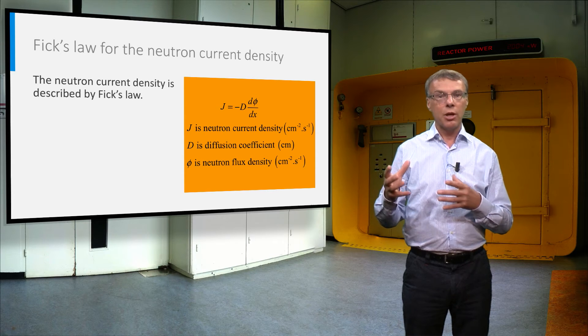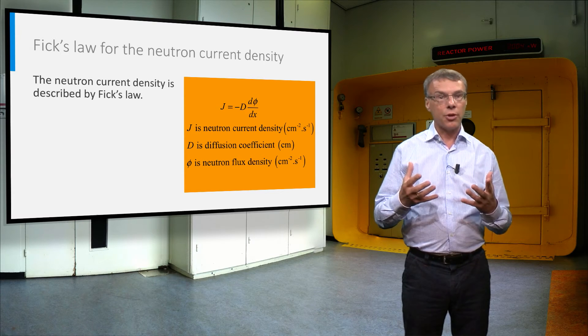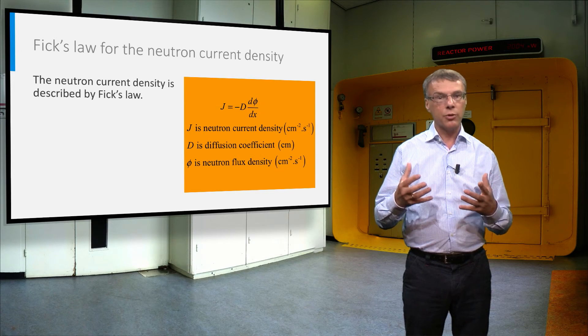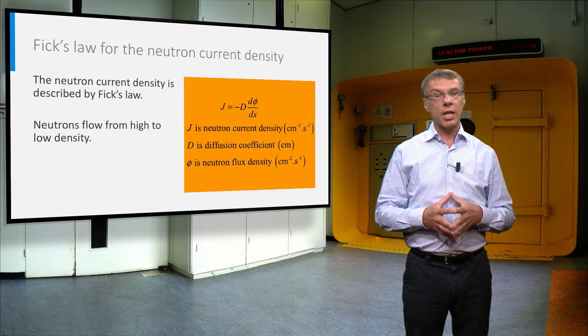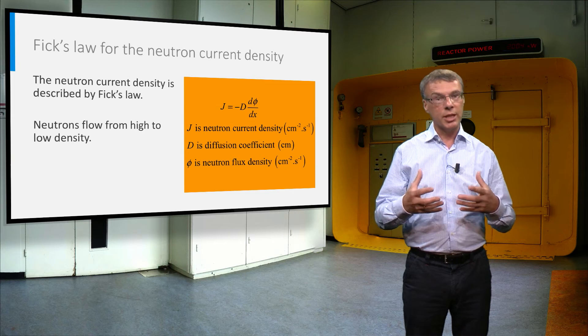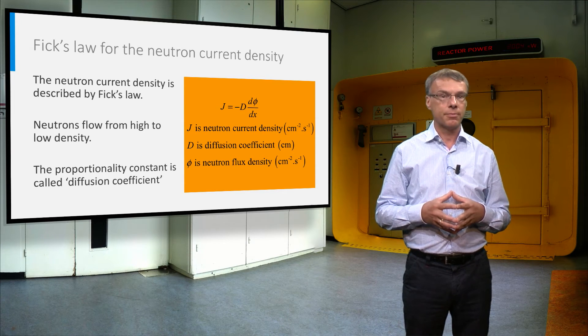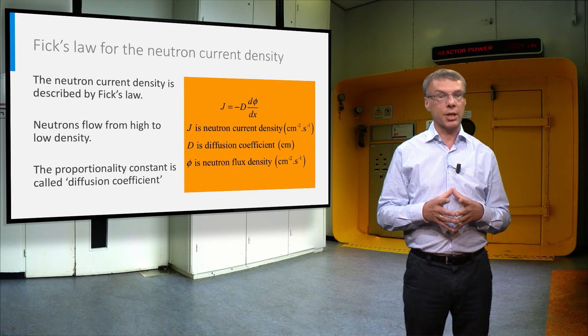Now we will derive an expression for the flow of neutrons from one region to the other. In diffusion theory, the transport of particles is described as being proportional to the gradient of the particle number density. In reactor physics, this would translate into a neutron current density that is proportional to the gradient of the neutron flux density. The formula for j gives the expression in one dimension, namely in the x-direction.